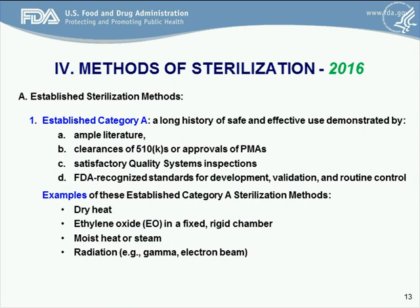Taking a closer look at established category A methods — these are methods that have a long history of safe and effective use, as demonstrated by ample literature, clearances of 510Ks or approvals of PMAs, satisfactory quality system inspections, and FDA recognized consensus standards for development, validation, and routine control. Examples of these include dry heat, ethylene oxide in fixed rigid chambers, moist heat (also known as steam), and radiation — examples include gamma and electron beam radiation.